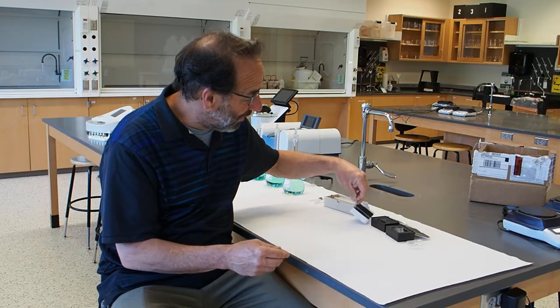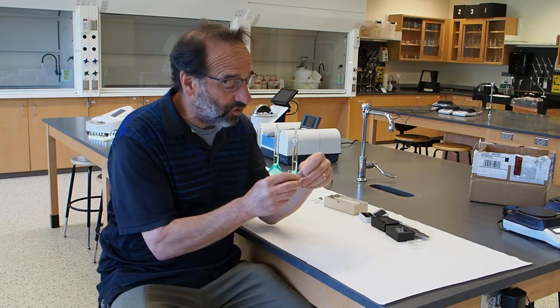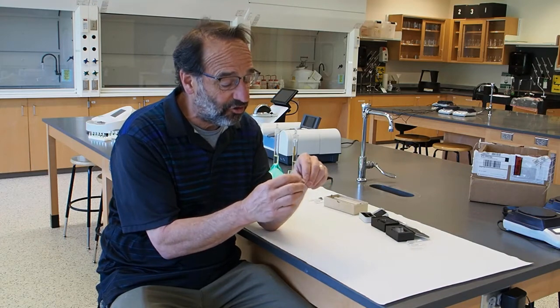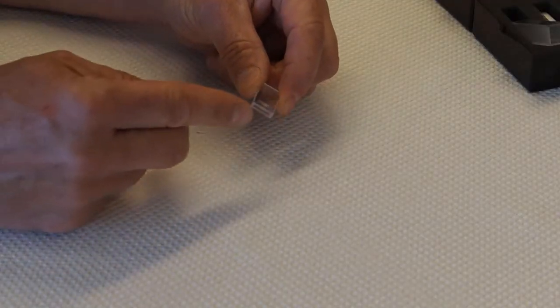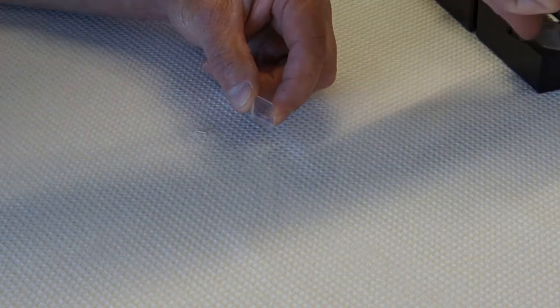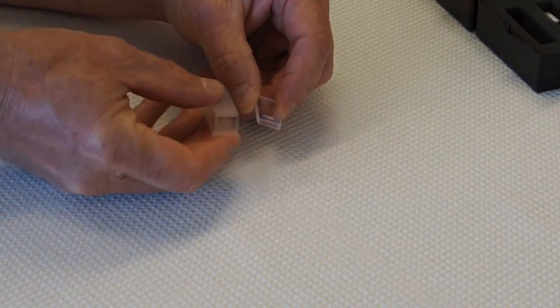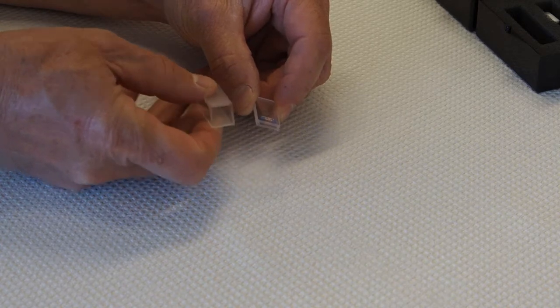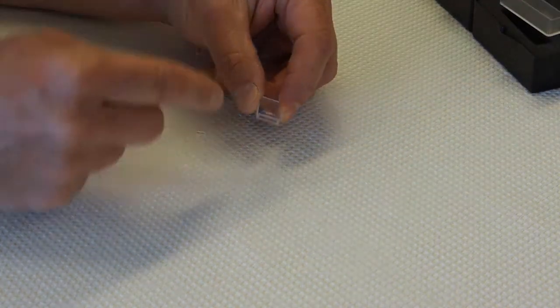This is a specialty cell used for a technique called circular dichroism. So this cell is really thin. It's got only one millimeter path length as opposed to this one here, which has one centimeter or 10 millimeter path length. So this one is only one tenth as wide.